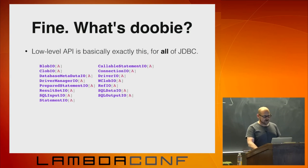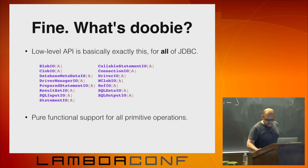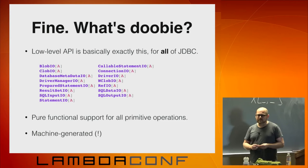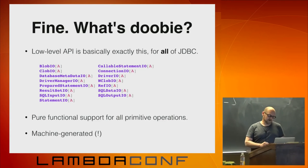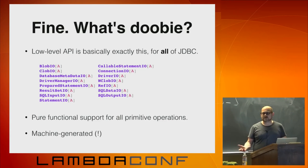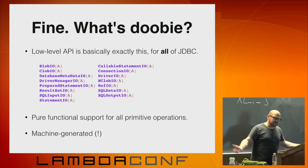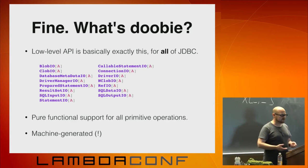Doobie has all of these different contexts you can use to build programs. There's pure functional support for all the primitive operations in JDBC. You may have thought thus far that this is all very mechanical — really boilerplate-y, just a formula, just an exercise you go through. And that's true. It turns out the low-level API in Doobie is entirely machine generated. I just reflect on the JDBC APIs and spit out the source code.